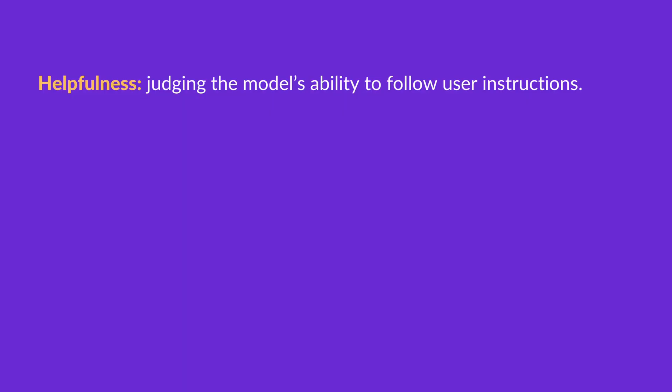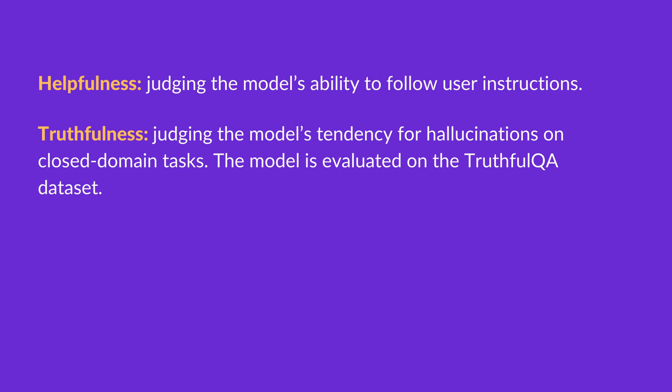Finally, let's talk about how this model was evaluated. Because the model was mainly trained on human labeler input, the core part of the evaluation is also based on human input. To avoid overfitting to the judgment of the human labelers involved in training, the test set consists of prompts not included in the training set at all. The model is evaluated on three high-level criteria: first is helpfulness, judging the model's ability to follow user instructions; second is truthfulness, judging the model's tendency for hallucinations or making up facts.